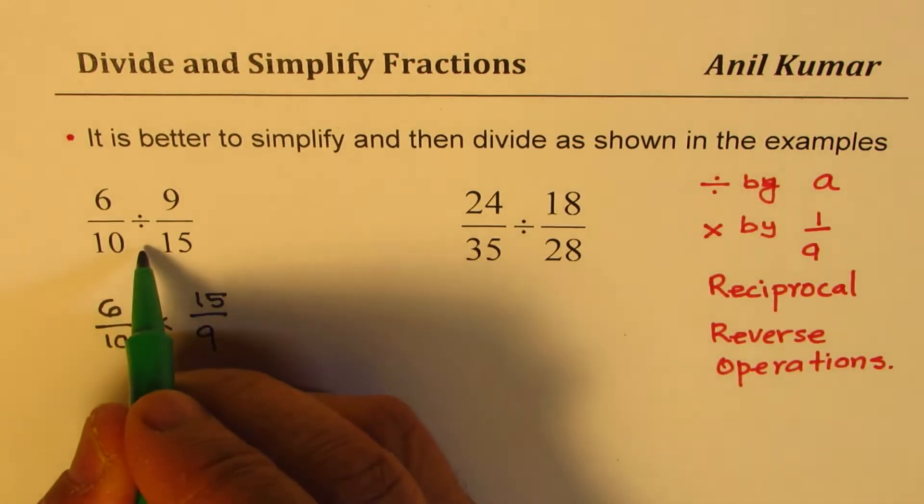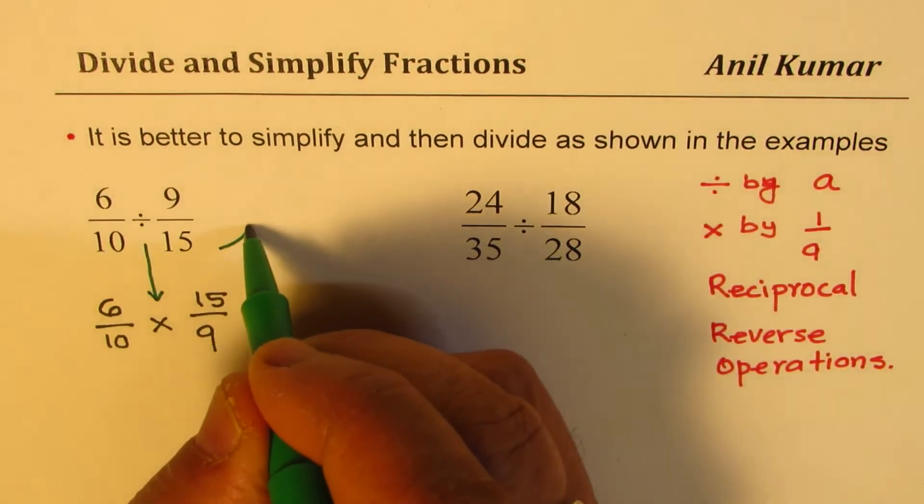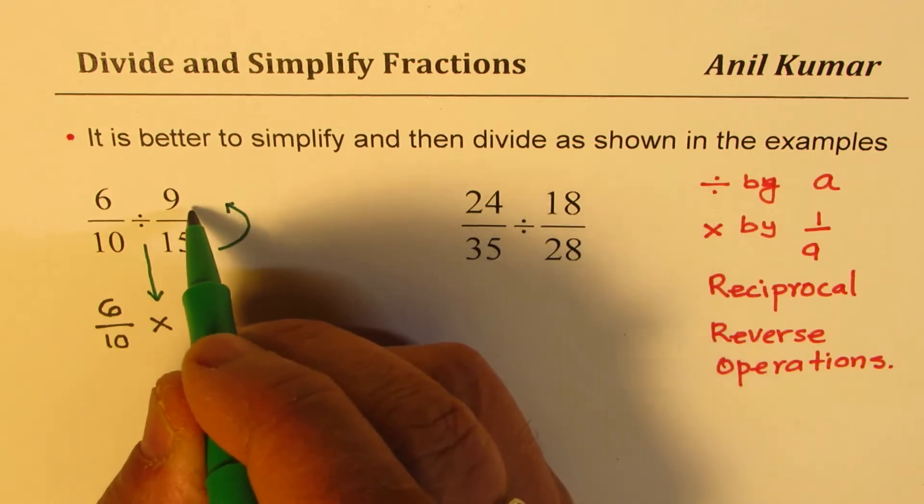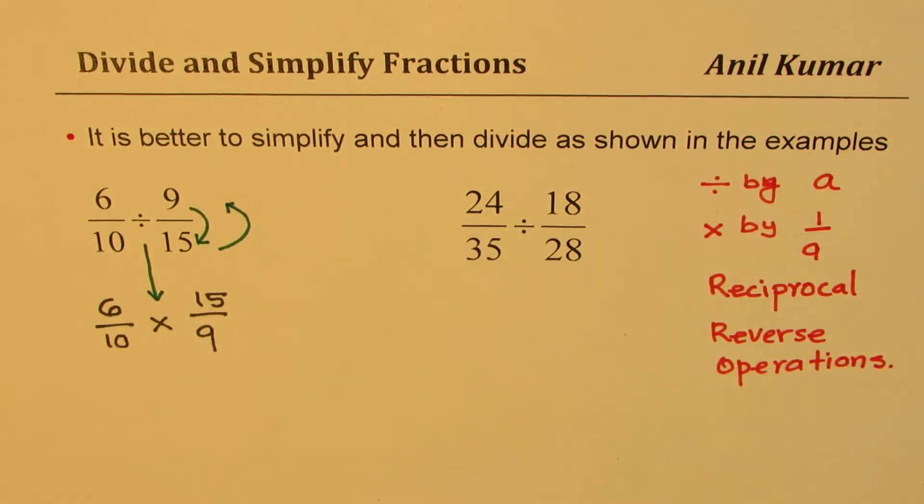And the sign, as you can see here, changes from division to multiplication. Do you see that? And we flip them, put this down—both are equivalent, correct? To give you an example, if I say 6 divided by 1 over 2...